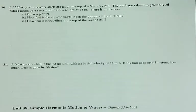Problem 30. A 1,300 kilogram roller coaster starts at rest on the top of a 60 meter hill. The track goes down to ground level before going up to a second hill with a height of 35. There is no friction.